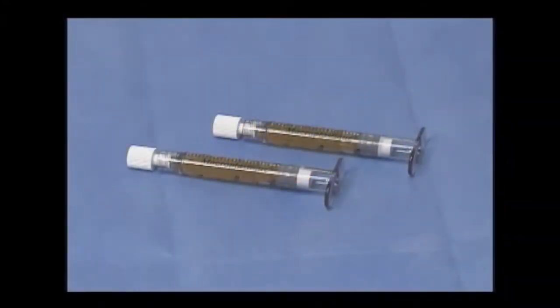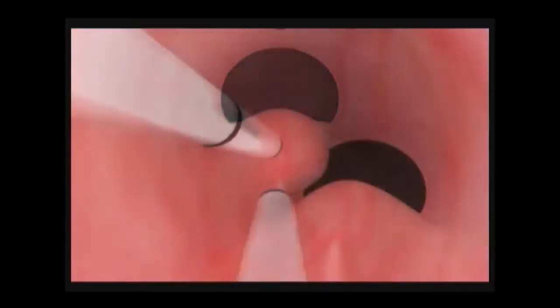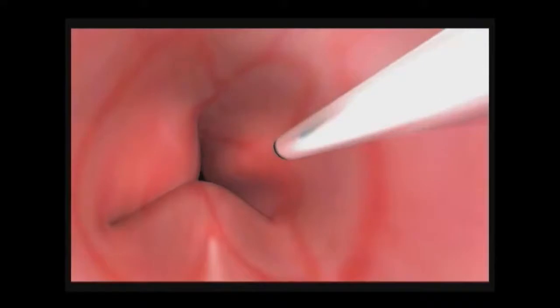Macroplastique is an injectable soft tissue bulking agent. During the implantation procedure, three boluses of macroplastique are implanted in the submucosa of the urethral wall.